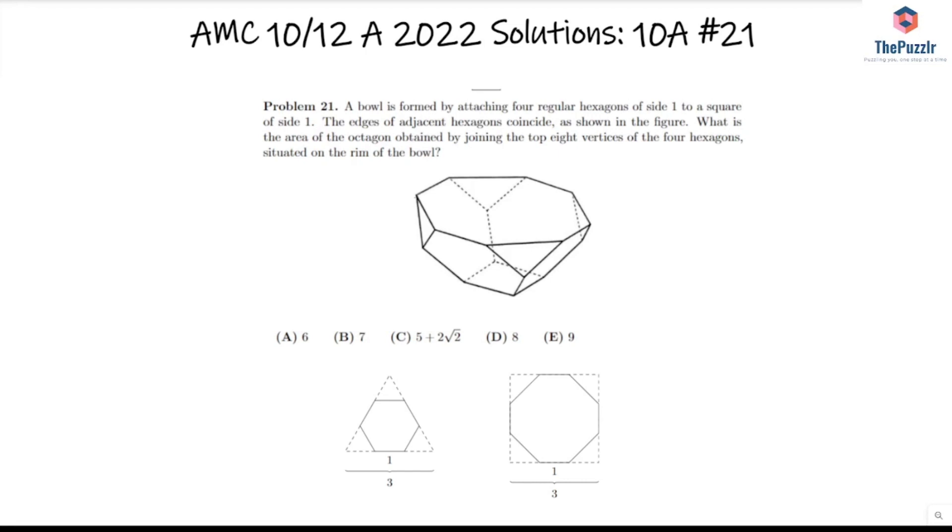Okay, so this problem is probably a bit hard to visualize, but the key insight is that if we were to extend this line of the hexagon and then extend this line of the hexagon, what we basically constructed is an equilateral triangle.